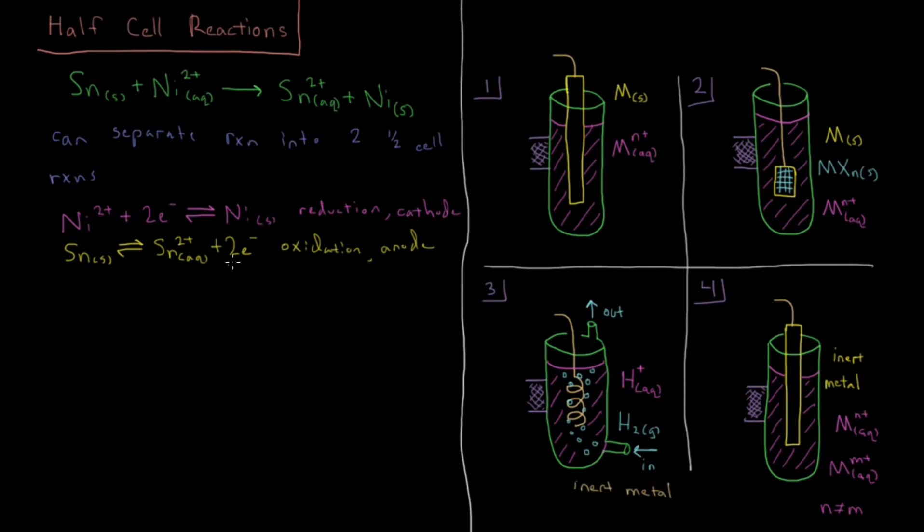So that's one type of the given half cell that can occur, these two types that are right here.